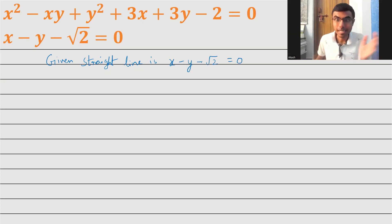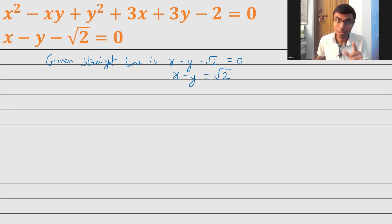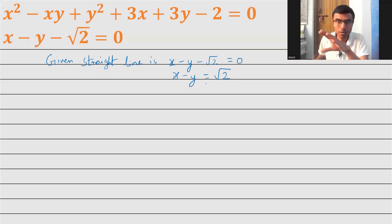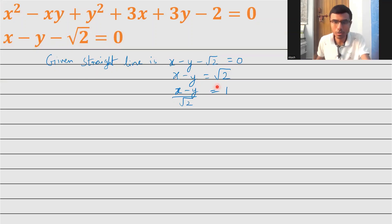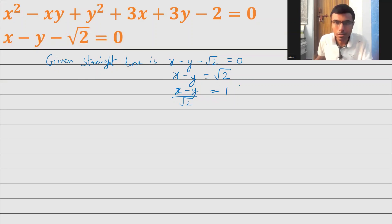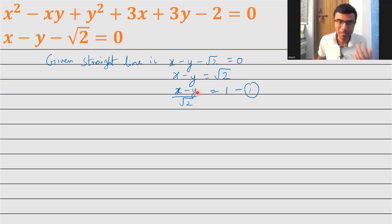Now what you need to do is send the constant to the RHS. So x minus y is equal to root 2. Now bring this constant to the LHS in division form: x minus y by root 2 is equal to 1. Since I brought root 2 here, I'll be left with 1 on the RHS. Mark this as equation 1.